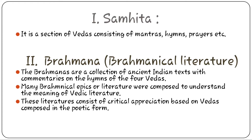Now we will discuss each one in detail. First, Samhita — it is a section of the Vedas consisting of mantras, hymns, prayers, etc. Second is Brahmanical literature. The Brahmanas are a collection of ancient Indian texts with commentaries on the hymns of the four Vedas. Many Brahmanical epics or literature were composed to understand the meaning of Vedic literature, and these consist of critical appreciations based on Vedas composed in poetic form.